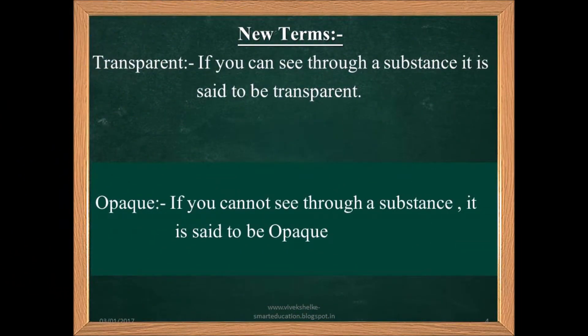New terms: Transparent — if you can see through a substance, it is said to be transparent. Opaque — if you cannot see through a substance, it is said to be opaque.